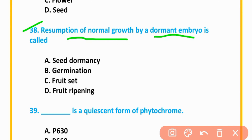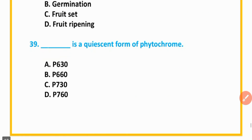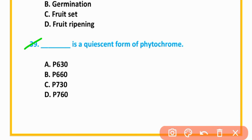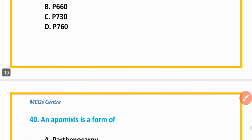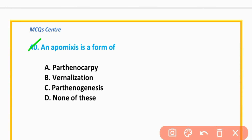MCQ number 38: Consumption of normal growth by a dormant embryo is called germination. Option B is correct. MCQ number 39: Phytochrome P660 is present. Option A is correct.